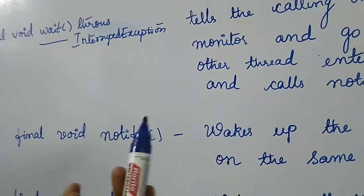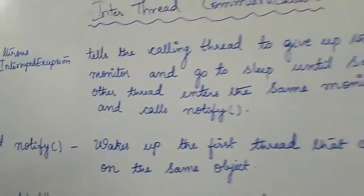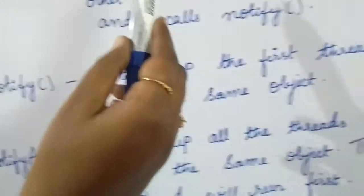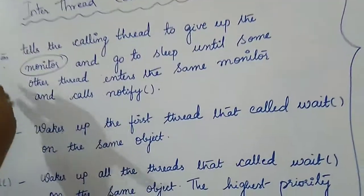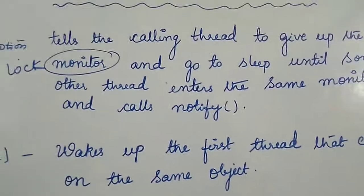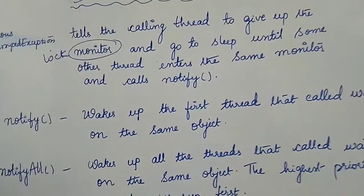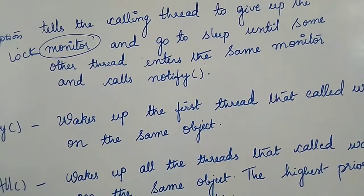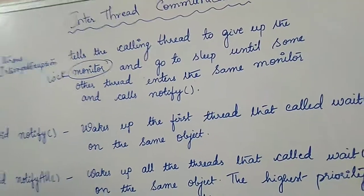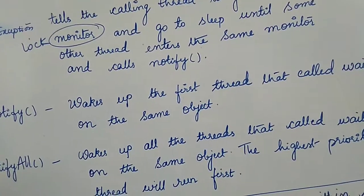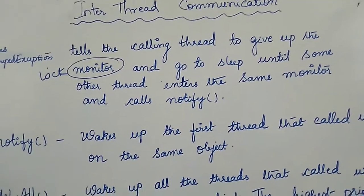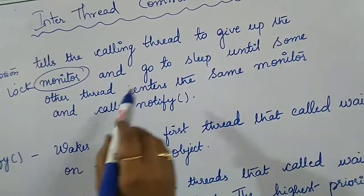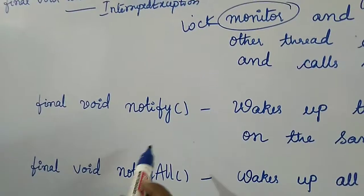All three methods are final methods. The wait method also has an overloaded version that takes a time argument, providing a timed wait, and it throws InterruptedException. Wait tells the calling thread to give up the monitor — meaning the lock of the shared resource — and go to sleep. Unlike sleep, which keeps the lock and suspends execution for a specific period, wait releases the lock and goes to sleep until some other thread enters the same monitor and calls notify.